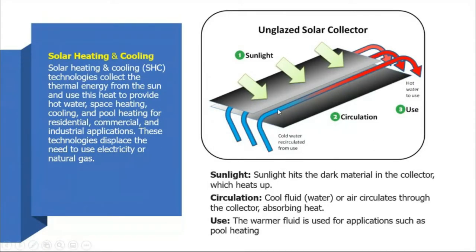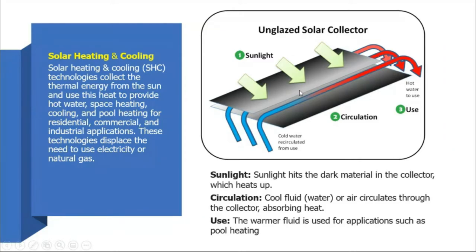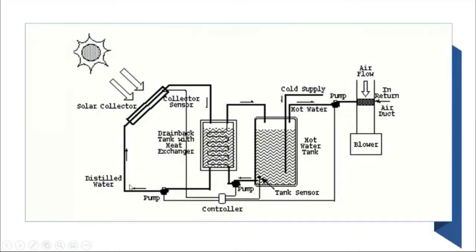The hot water can be used directly for domestic purposes, or we can use that hot water for a central heating system, for example in hospitals. Sunlight hits dark material inside the collector, heat is absorbed, and fluid circulates. The sun's energy goes into the solar collector; warm water comes out and is stored in a tank.